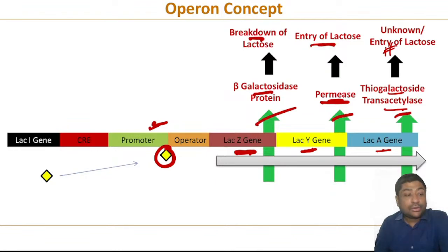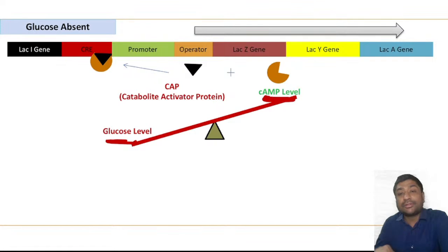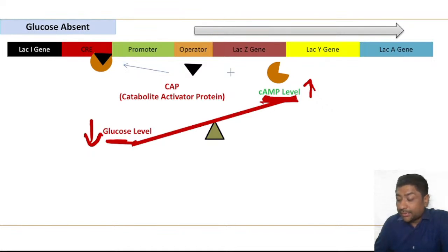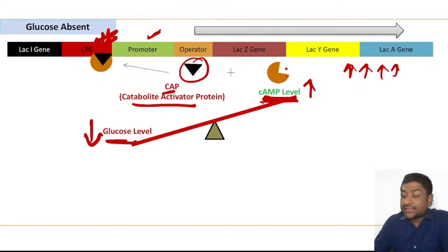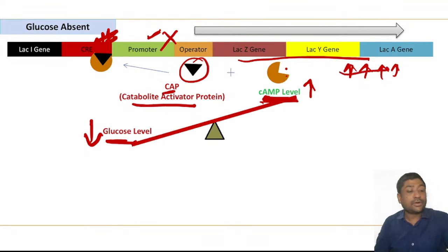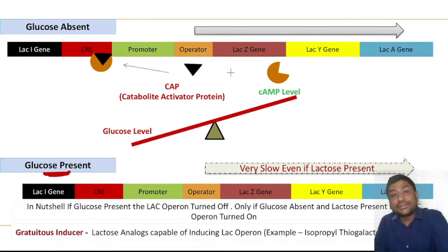Now introducing glucose: glucose levels and cyclic AMP levels are inversely proportional. When glucose comes down, cyclic AMP goes up. This cyclic AMP attaches with CAP — catabolite activator protein — and this CAP-cAMP dimer binds on the CRP site. If the promoter is free, this increases the rate of transcription of all lac genes. If the promoter is not free, no action occurs. That is why CAP is called a positive regulator — it positively enhances transcription when glucose is absent.